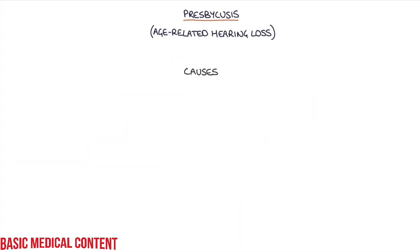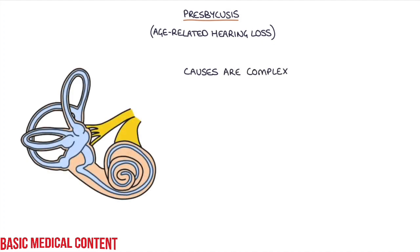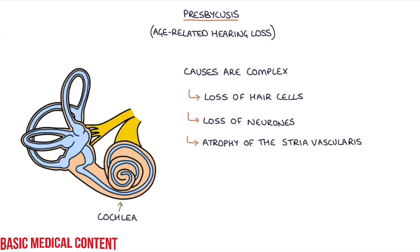The causes of hearing loss in presbycusis are complex. There's likely to be several different mechanisms causing the hearing loss, and these include a loss of the hair cells in the cochlea, loss of the neurons in the cochlea, atrophy of something called the stria vascularis which is important in regulating the endolymph, and also reduced endolymphatic potential.